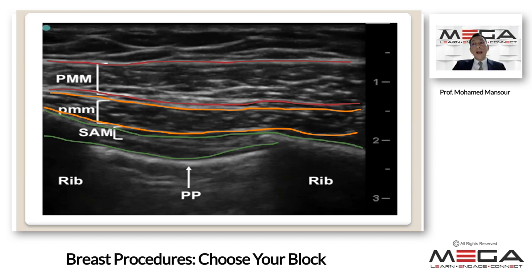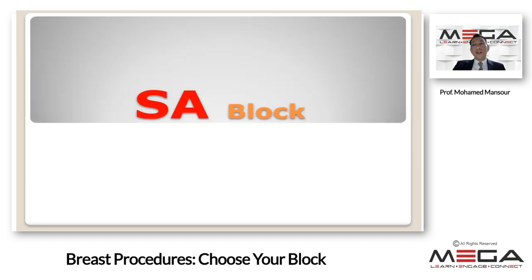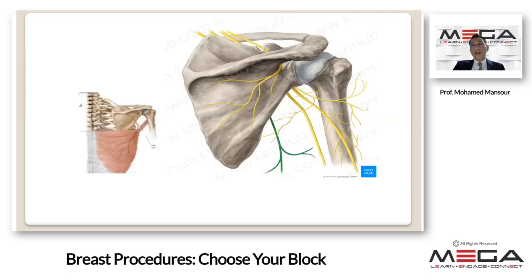Blanco continued sonographic exploration of the chest wall and identified two potential spaces at the axillary level — the serratus plane block. The serratus plane block targets the thoracodorsal and thoracic intercostal nerves, blocking the lateral part of the thorax. The indication for this block is latissimus dorsi flap reconstruction.